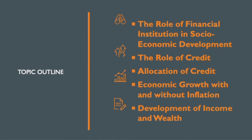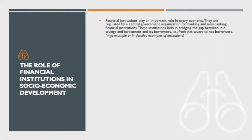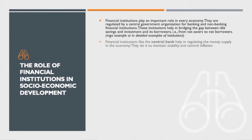First is the role of financial institutions in socio-economic development. Financial institutions play an important role in every economy. They are regulated by central government organizations for banking and non-banking financial institutions. These institutions help bridge the gap between idle savings and investments, channeling funds from net savers to net borrowers. For example, financial institutions like the central bank help in regulating the money supply in the economy.